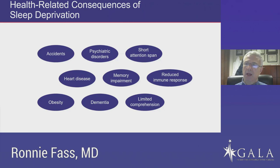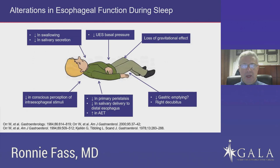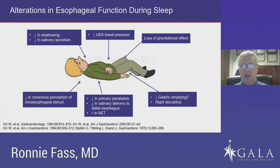Let's look at the effect of sleep on esophageal function. During sleep, there is a significant decrease in swallowing — almost to none — and also a significant decrease in salivary secretion. These are two important defense mechanisms against gastroesophageal reflux. Swallowing results in primary peristalsis that delivers saliva to the lower esophagus, and saliva can neutralize acidic reflux. In addition, during sleep, especially deep sleep, there is a decrease in upper esophageal sphincter basal pressure, potentially allowing reflux to traverse the upper esophageal sphincter and end up in the larynx, pharynx, and pulmonary system.